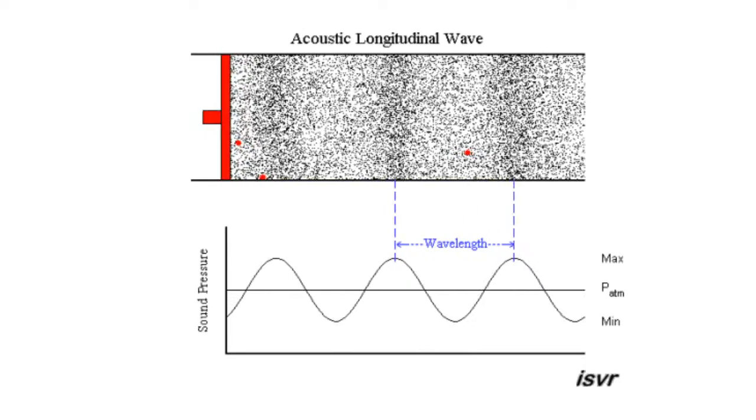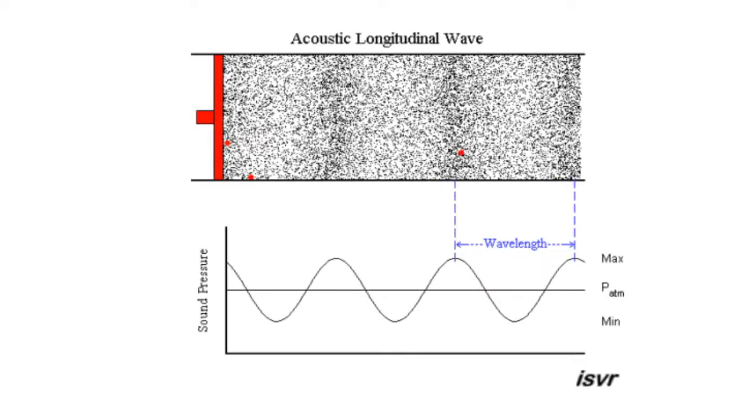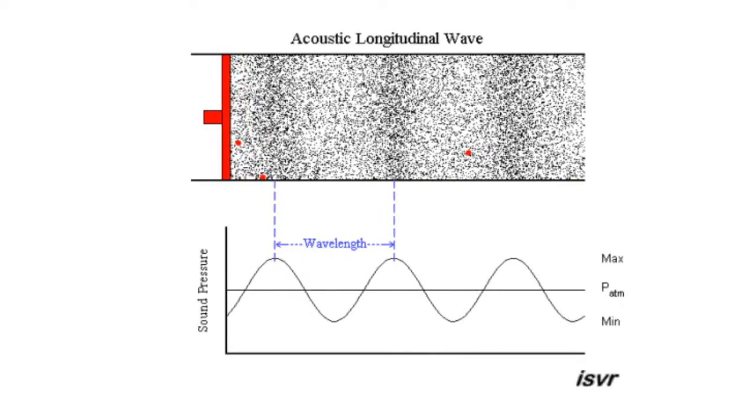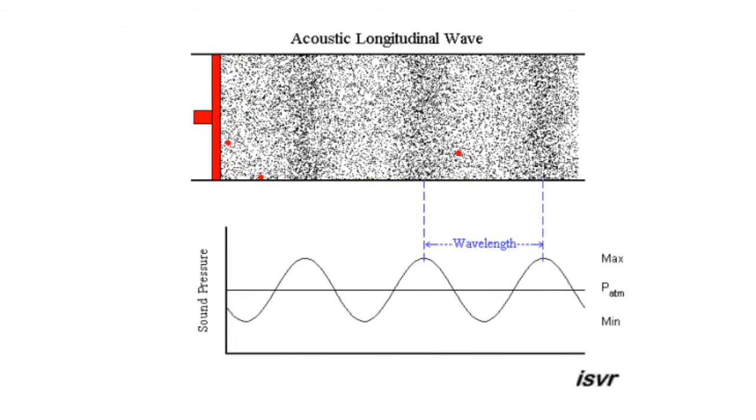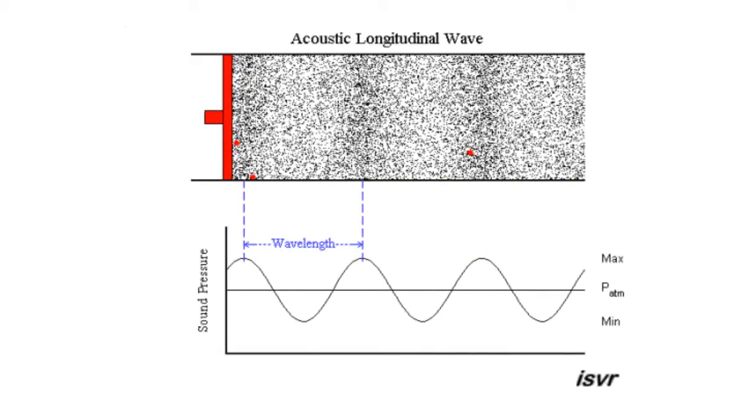At the same time, during the object's movement backwards, it pulls air particles, creating a region of expanded air or low pressure. And those particles pull the next ones, and those pull the next ones, propagating a region of low pressure through the air.